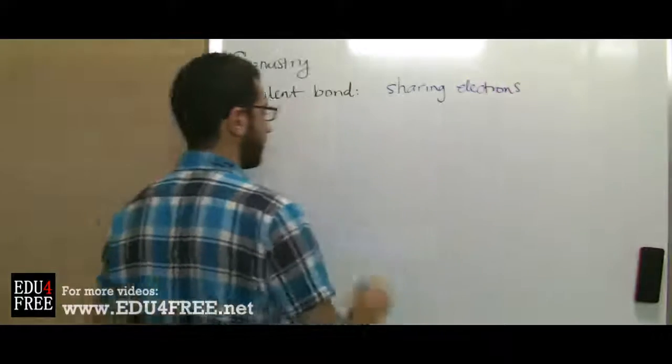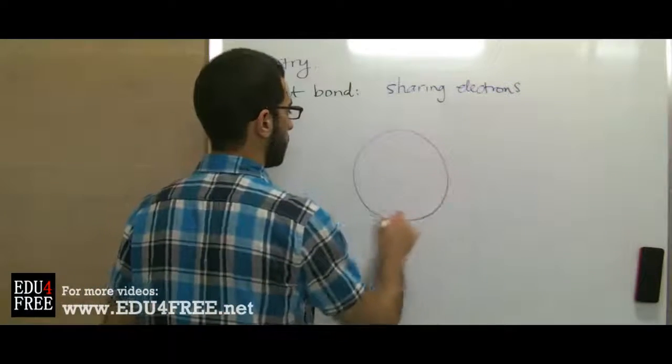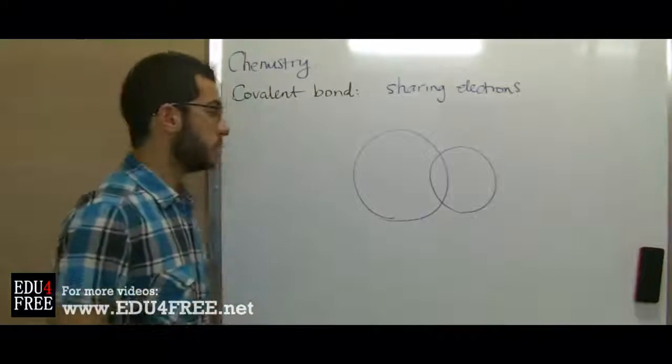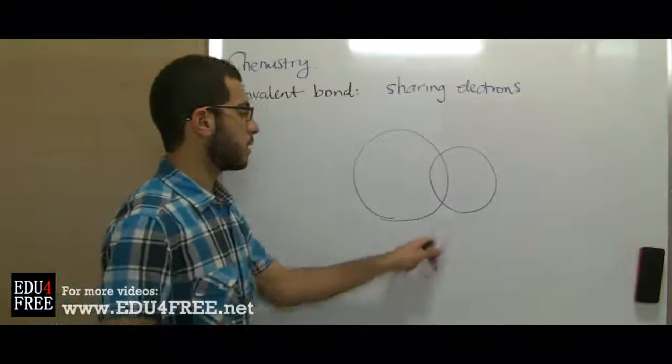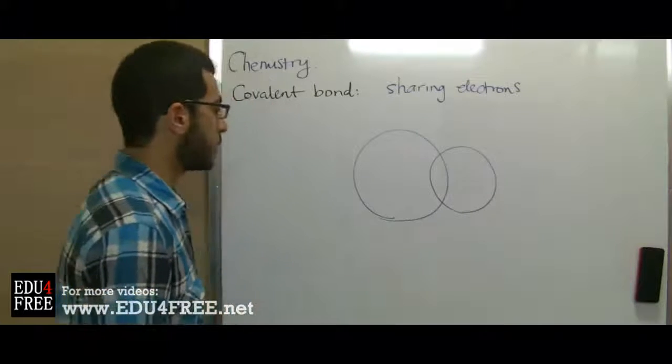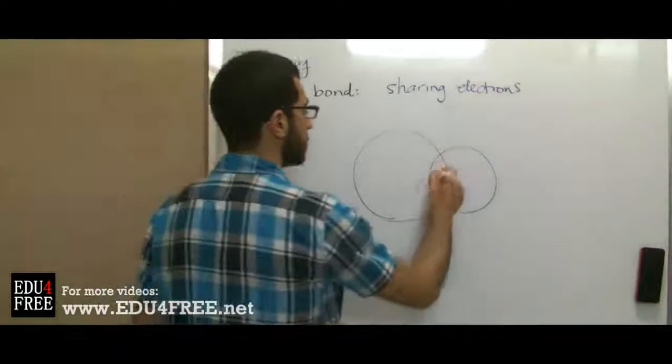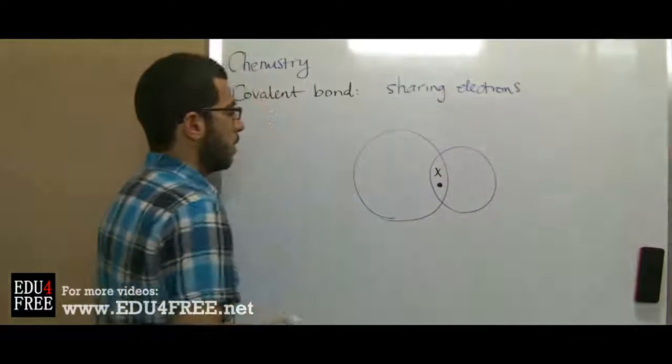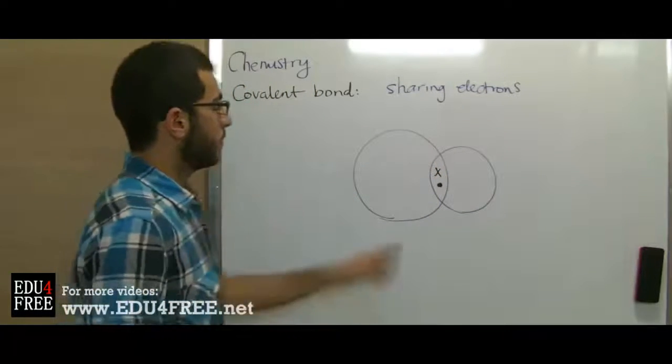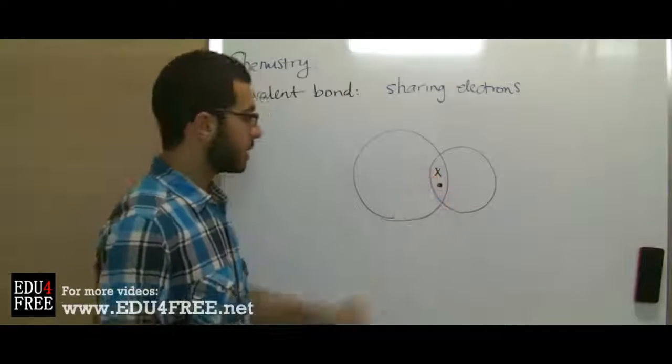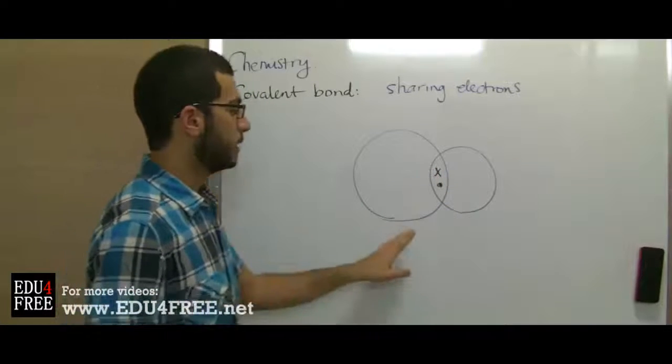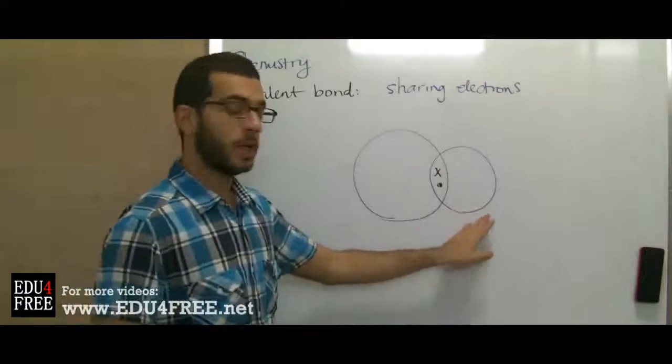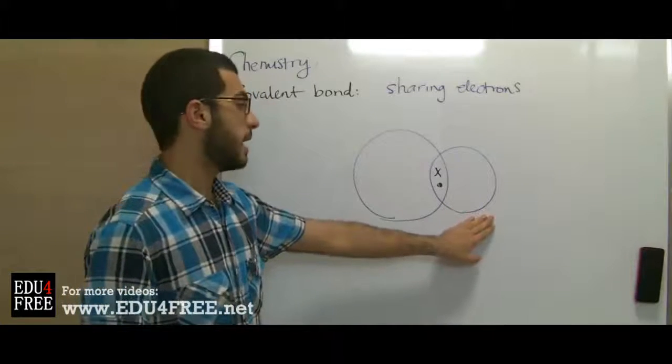On the contrary, covalent bonds occur due to sharing electrons. For example, these are two atoms. These are the two outermost energy levels of these atoms and they share a pair of electrons. The idea is this pair of electrons spend time in one atom and some other time in the second atom.